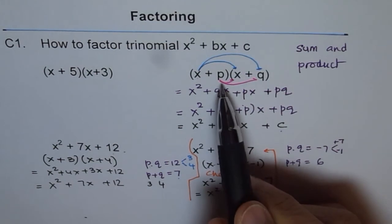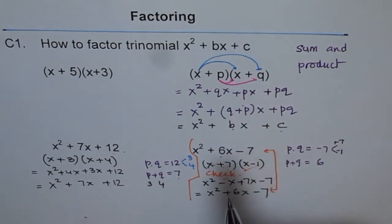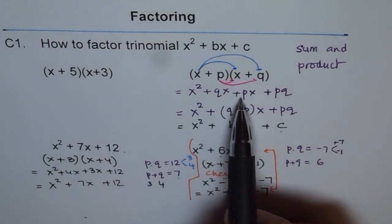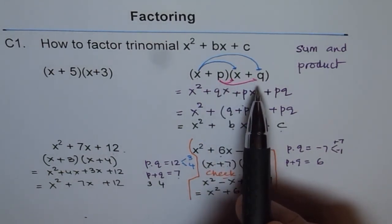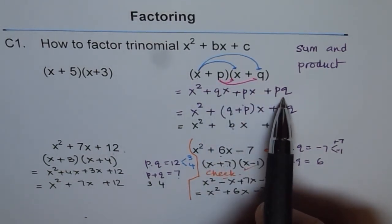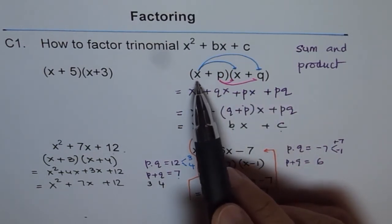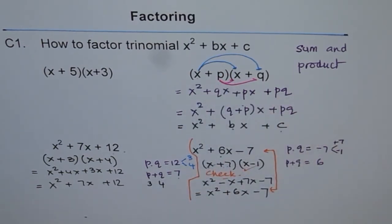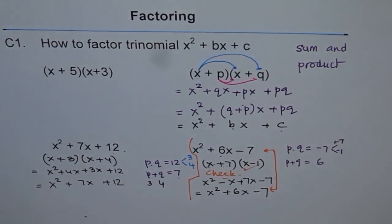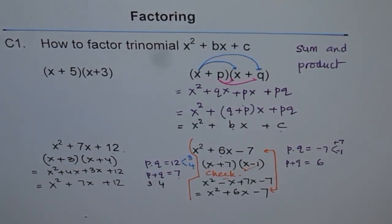So the two factors, the possible factors, are related. That the center term should be the sum, p plus q and the constant term should be the product. That is how you do factoring. Once you get those two magic numbers, then you can straight away write like this. x plus p times x plus q. Factoring is done. I hope you understand and appreciate this process.